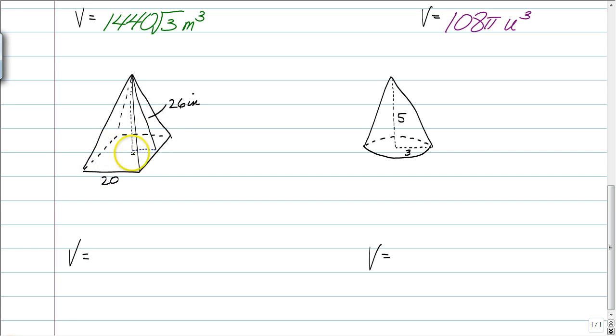If this is 20, then this is going to be split into 10 and 10. Pythagorean theorem to find the height: 10 squared plus h squared is equal to 26 squared. So we're going to find that the height is 24.